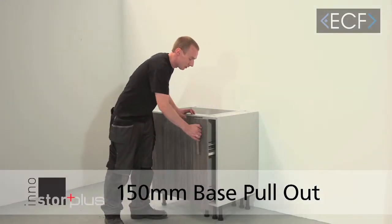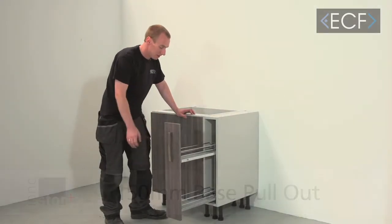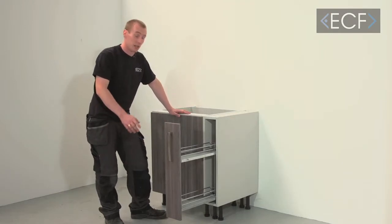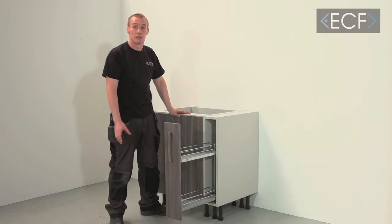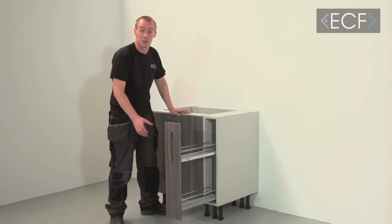This is an Innistore Plus base pullout for a 150 cabinet. It's full extension, giving you easy access to everything outside of the cabinet, and makes the most of small spaces in your kitchen for bottles, cans, etc.